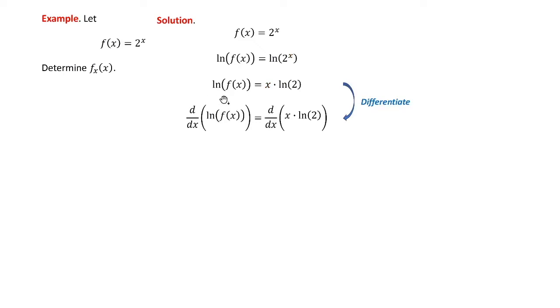Now I'm going to differentiate this step. There's just this preliminary step, differentiate this. On the right, log 2 is a constant, so it comes out in front and the derivative of x is, of course, 1.